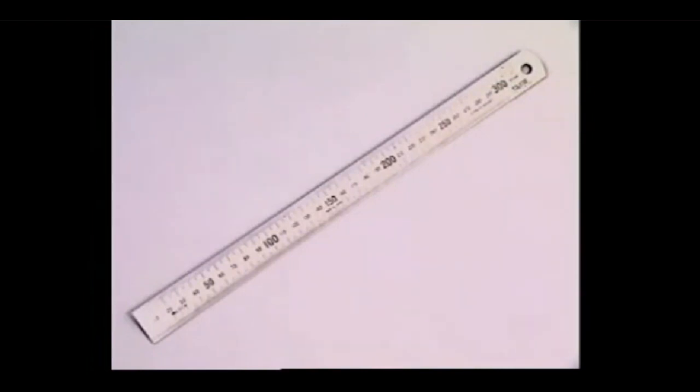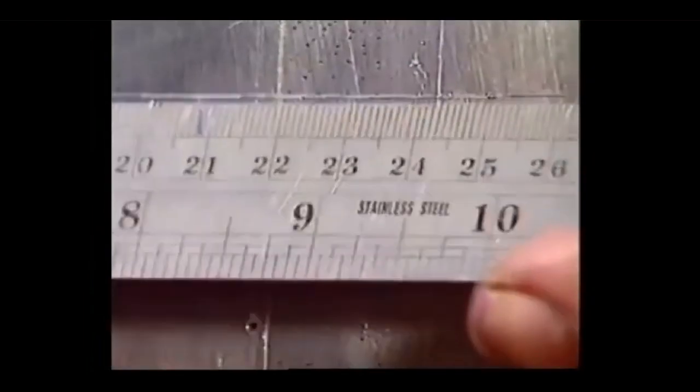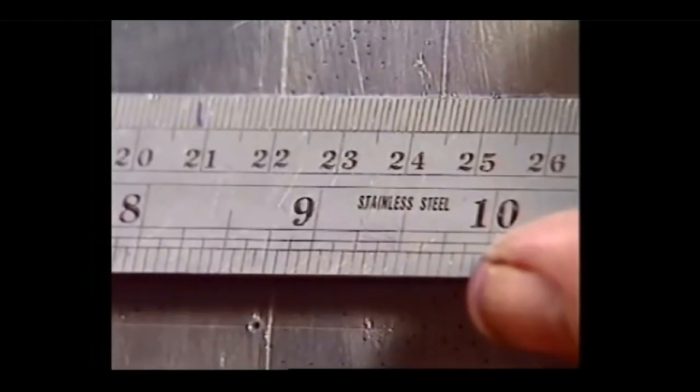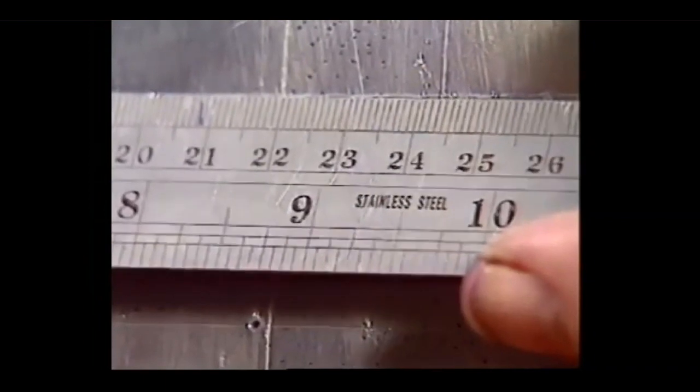A steel rule is capable of accurate measurement down to a millimeter. The graduations must stay as close as possible to the points being measured, and the rule must be read as close to square on to the scale as possible.